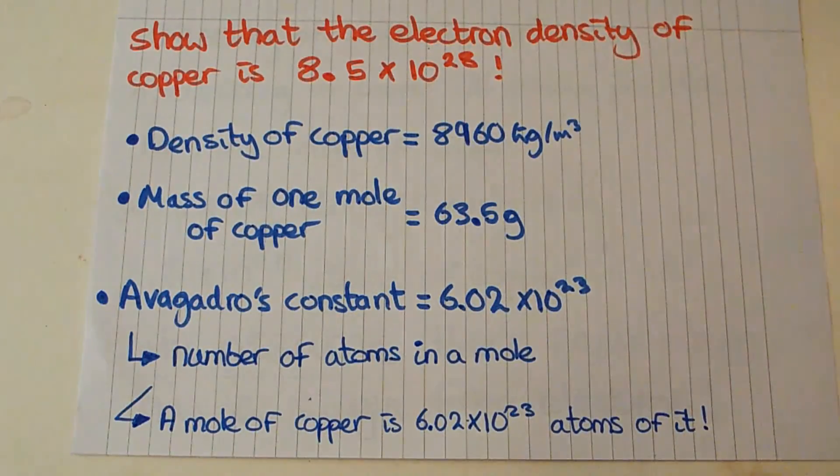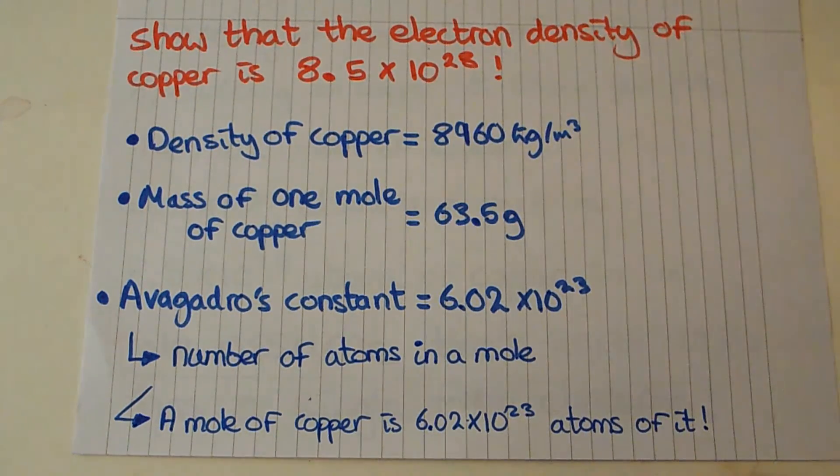Here's the information that I'm going to give you. We know the density of copper is 8,960 kilograms per meter cubed, the mass of one mole of copper is 63.5 grams, and I'm also going to tell you that Avogadro's constant is 6.02 times 10 to the 23. Avogadro's constant is literally just the number of atoms in a mole.